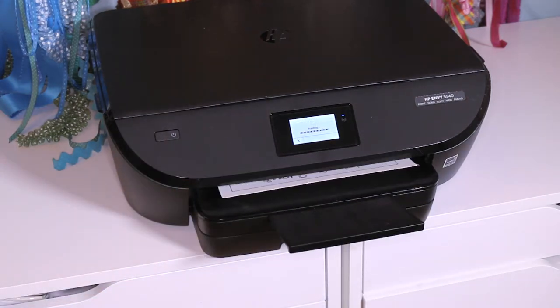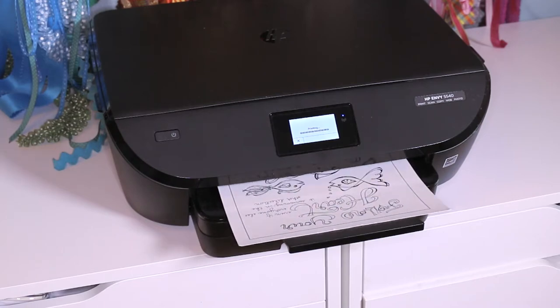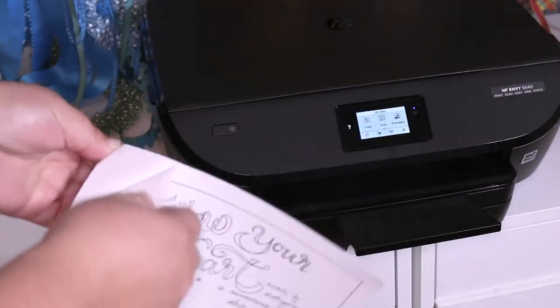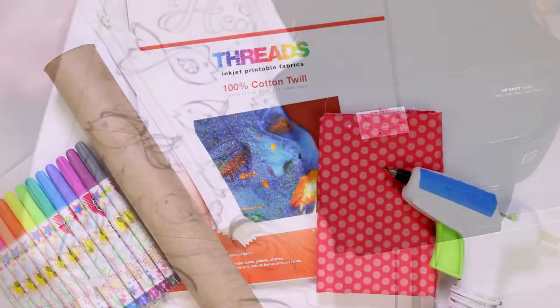Next, download a printable PDF coloring book page and send it to the HP Envy to print. Once the fabric has printed, peel away the carrier sheet or backing sheet and discard. What will be left is an 8 1⁄2 by 11 inch piece of custom printed fabric that looks like a coloring book page.